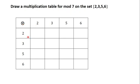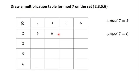We are going to multiply these numbers in mod 7. We begin with the first row. 2 × 2 is 4, and 4 in mod 7 is 4. 2 × 3 is 6, and 6 in mod 7 is 6. 2 × 5 is 10, and 10 in mod 7 is 3.